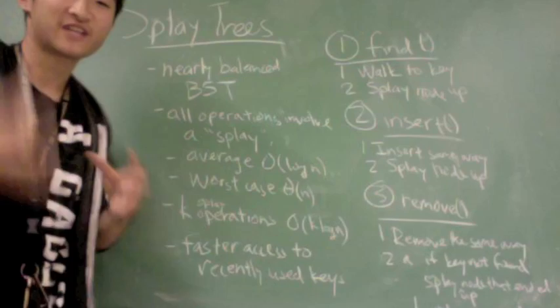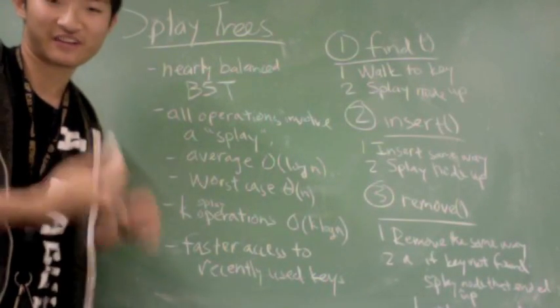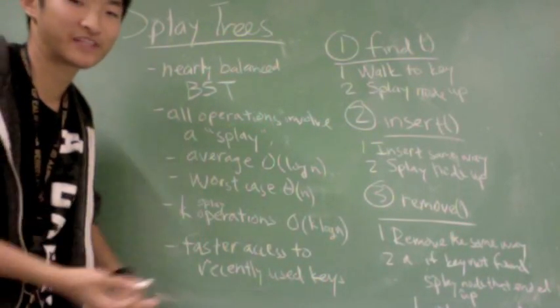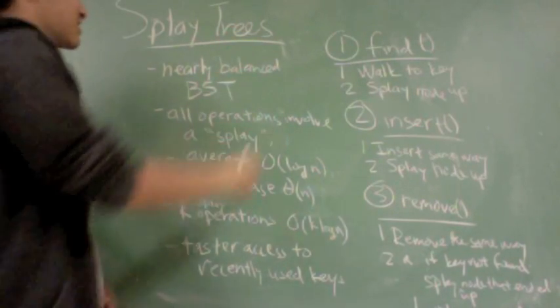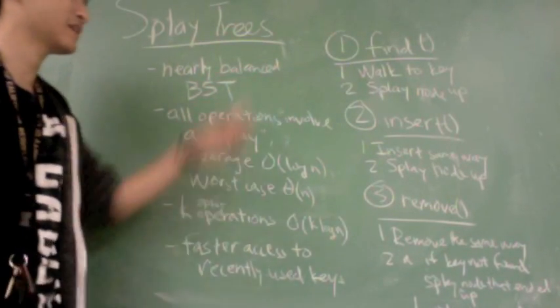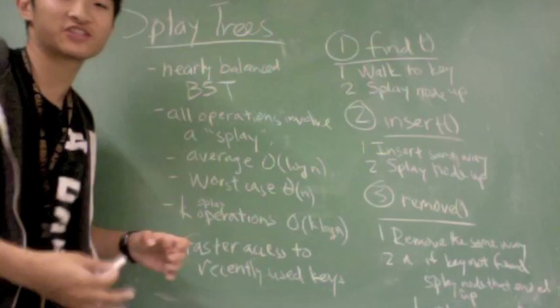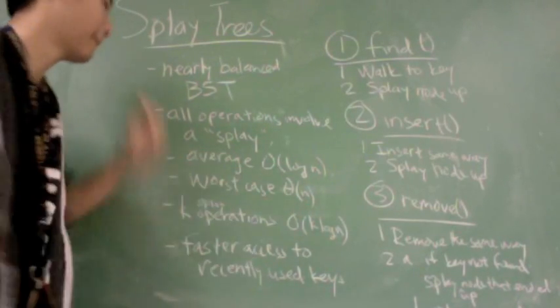We've talked about binary search trees and how they can be unbalanced, then we talked about a potential solution in 2-3-4 trees. Splay trees are yet another solution that tries to balance the BSTs such that all the operations run on average in log n time. And boy, do they.